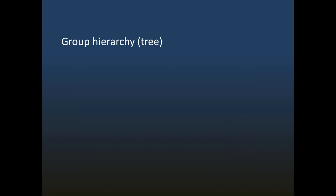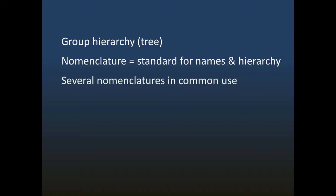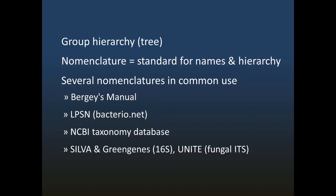Named groups are organized into a hierarchy which can be visualized as a tree. The goal of taxonomy is often described as designing a hierarchy which is useful and corresponds as closely as possible to the evolutionary tree. A taxonomic nomenclature is a standard for group names and their hierarchy. Unfortunately, in microbial taxonomy, there are several different nomenclatures in common use, including Bergey's Manual, the list of prokaryotic names with standings in nomenclature, the NCBI taxonomy database, and systems defined by sequence databases such as SILVA, Greengenes, and UNITE.